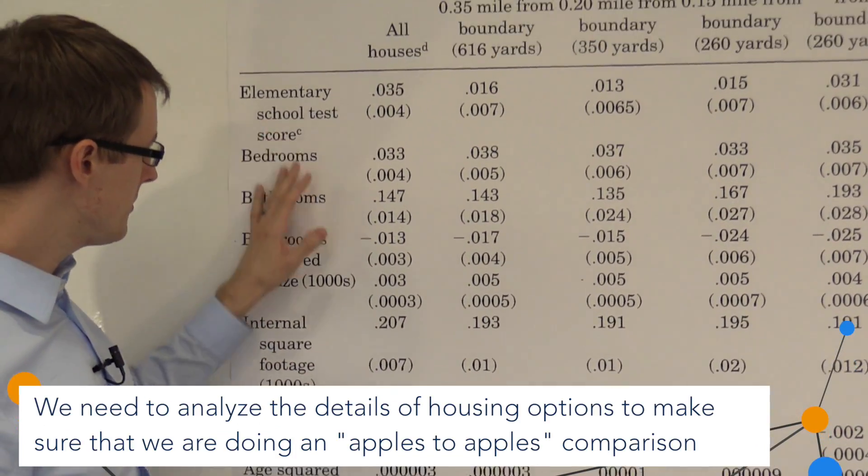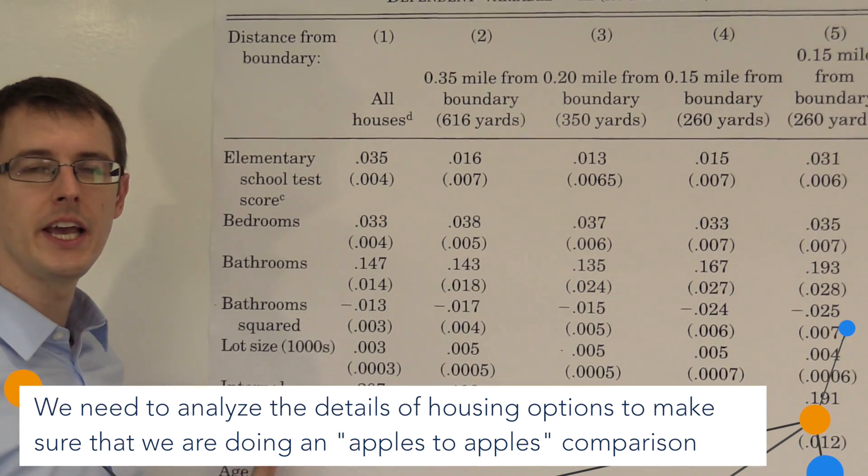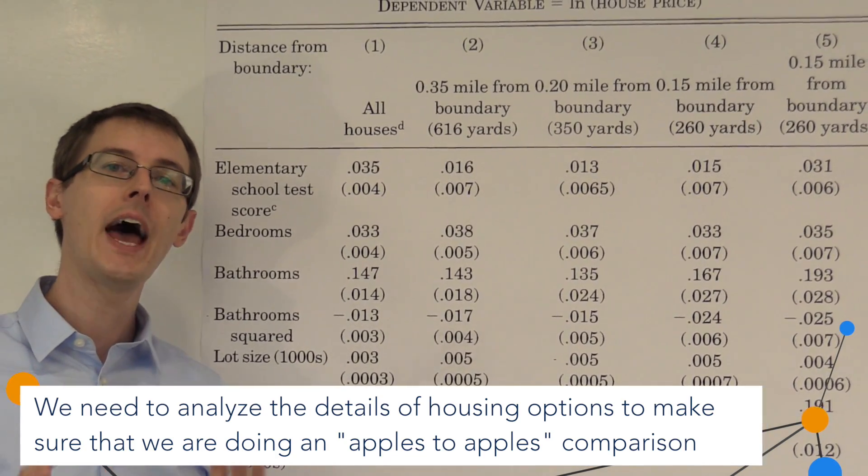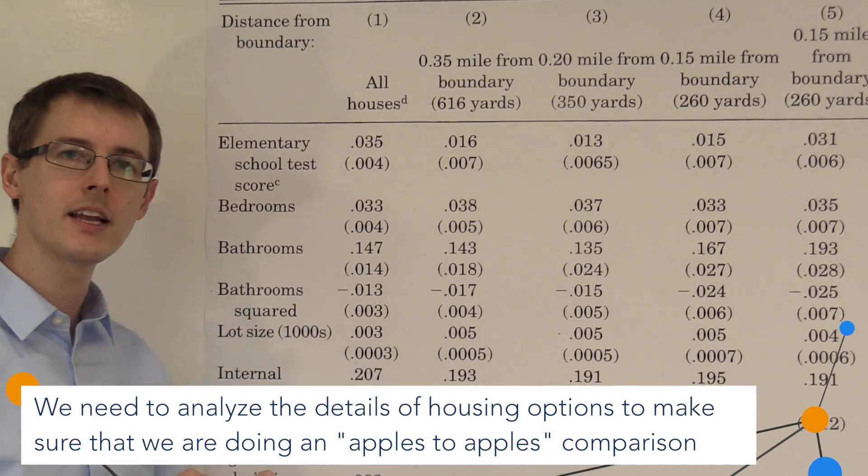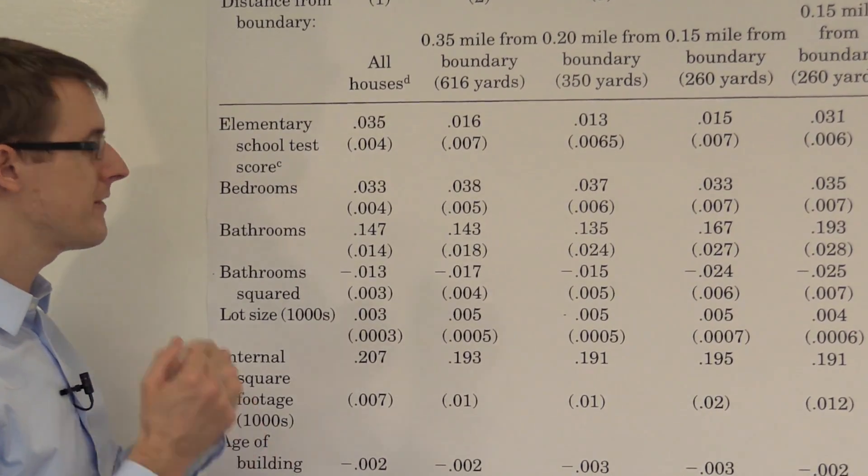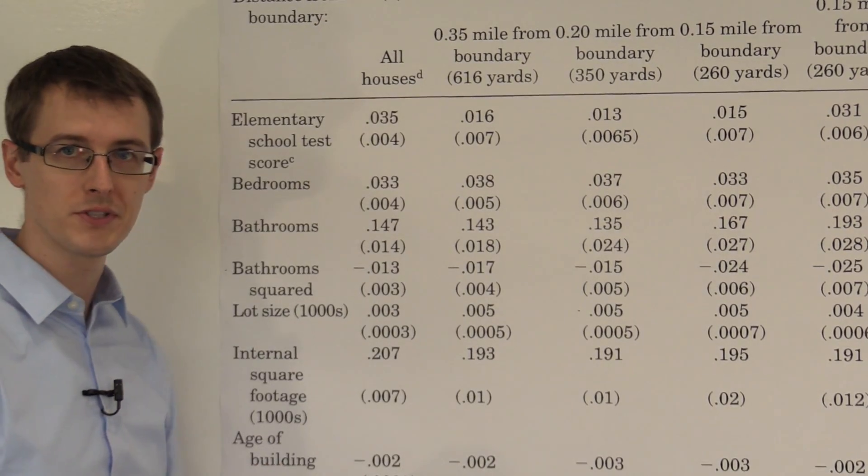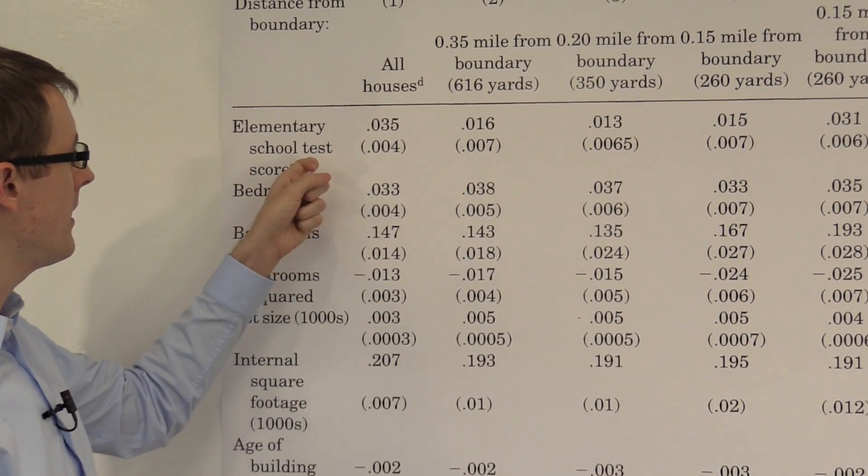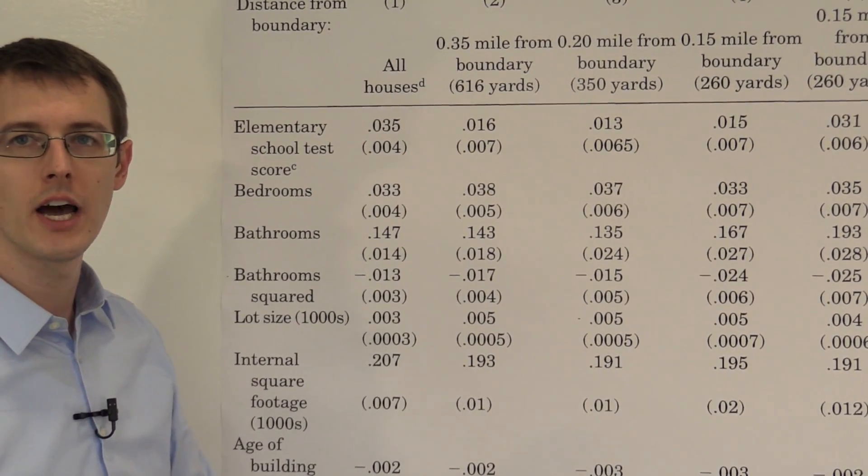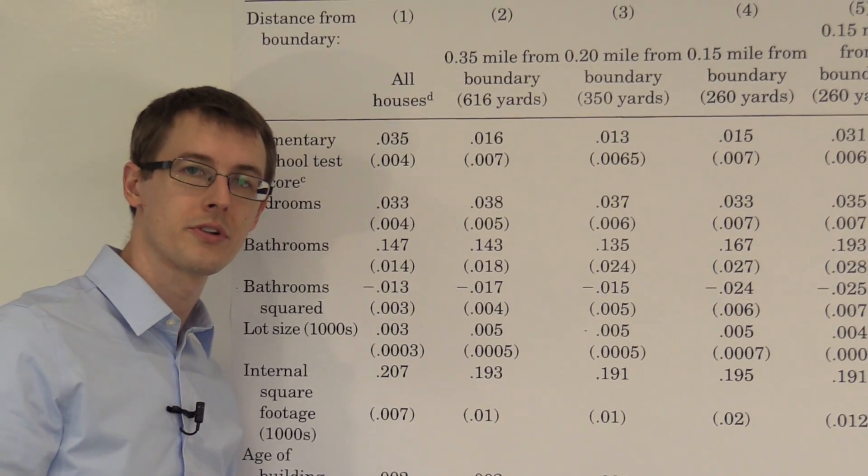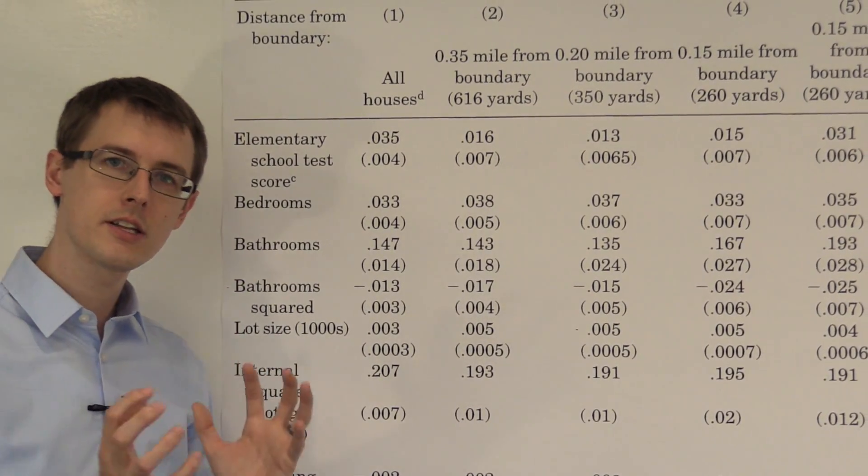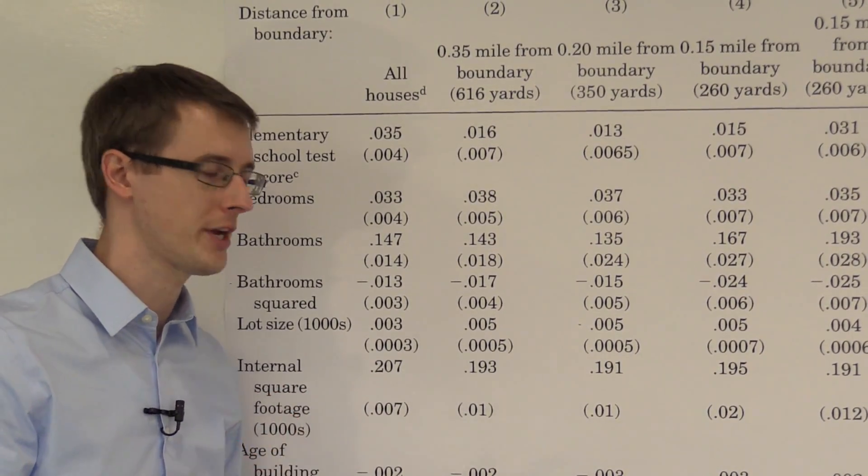So we're going to include all these other variables in our regression analysis. And that means that what we're going to do is basically look at houses that have the same values of all of these variables, except one of them has a higher elementary school test score and some of the other ones don't. So we're using this to control what kind of houses we're looking at.